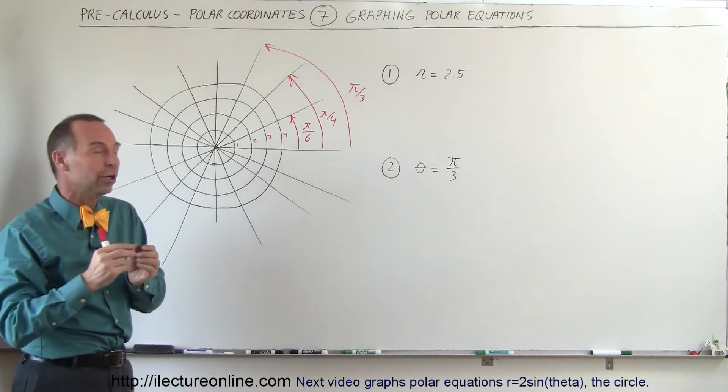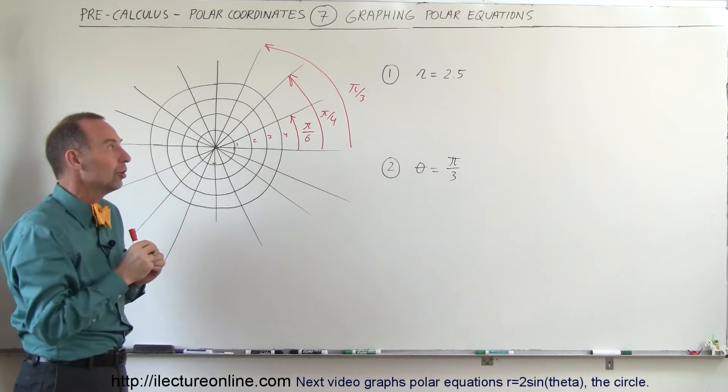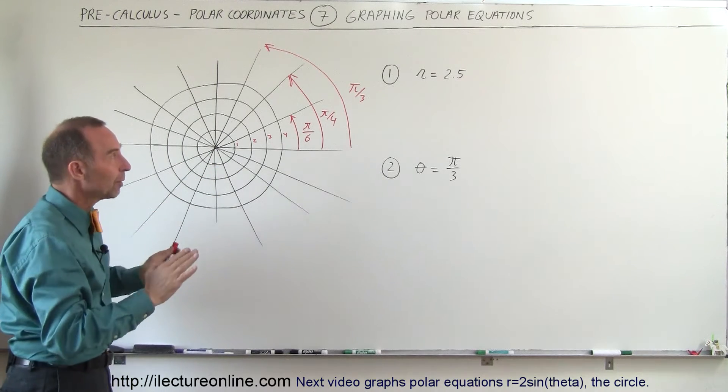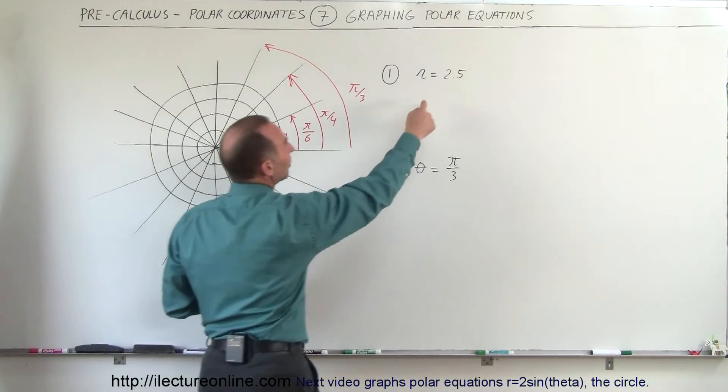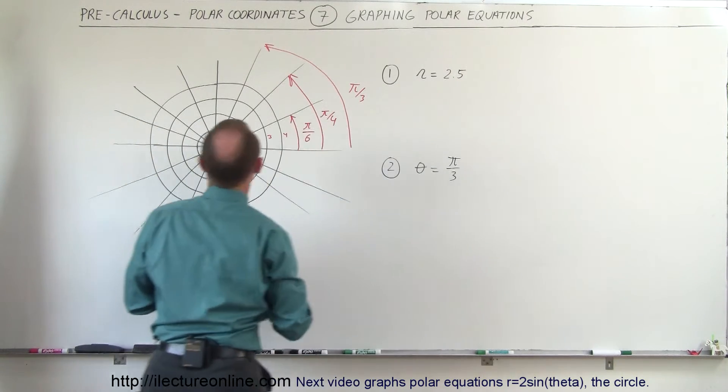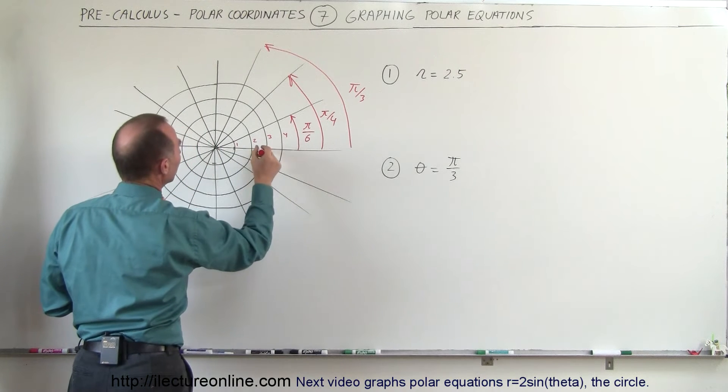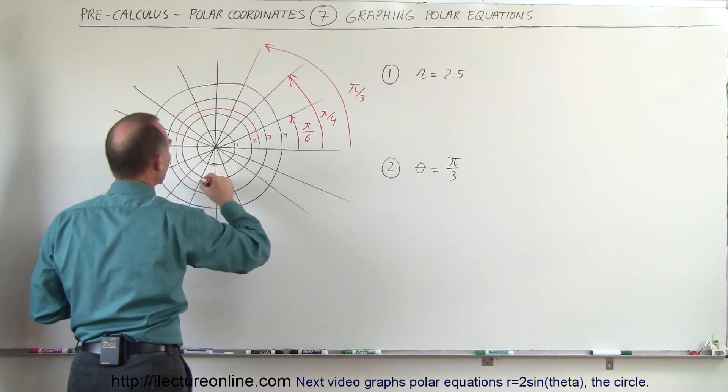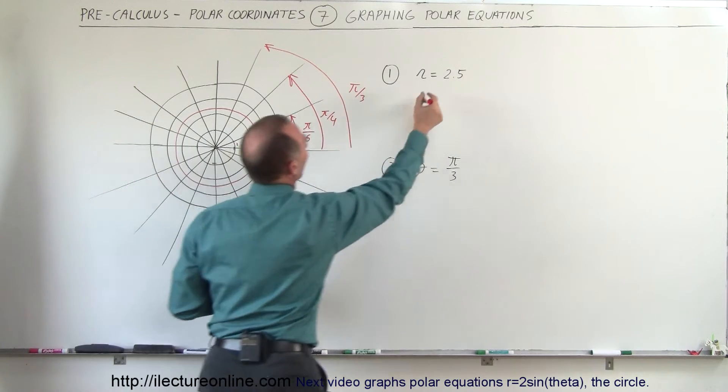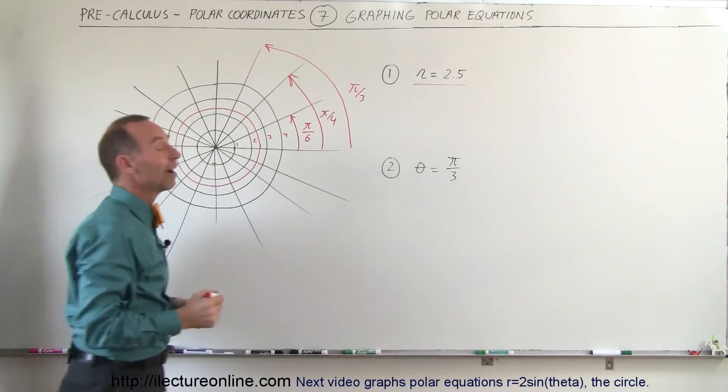Notice that it only specifies r, the distance from the origin, to be 2.5 and no specification for theta so theta can be any value, which means this is simply a circle with radius 2.5. So between 2 and 3, the circle right here would be representative of the graph of the equation r equals 2.5.